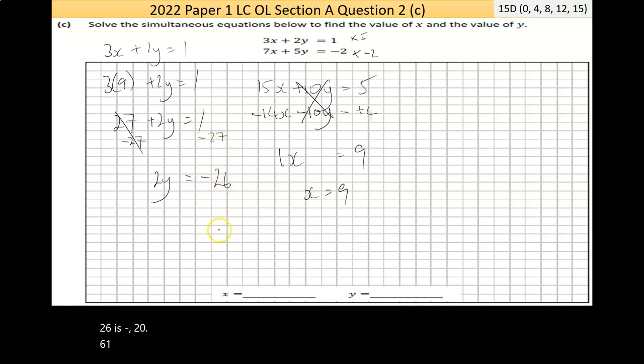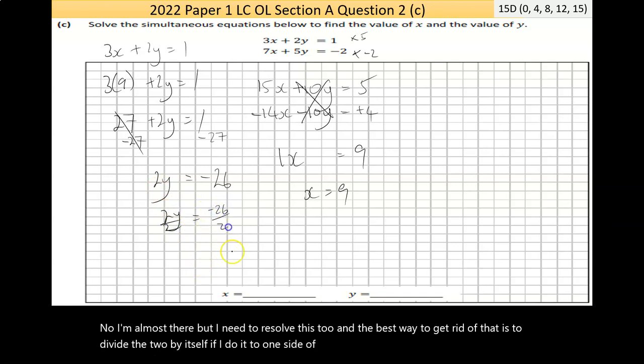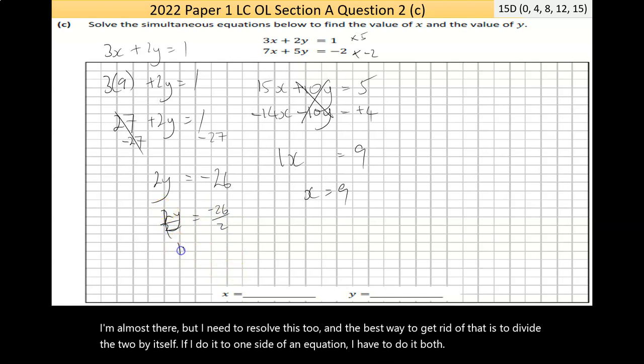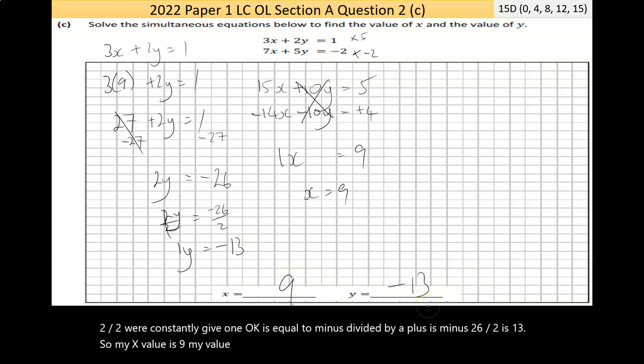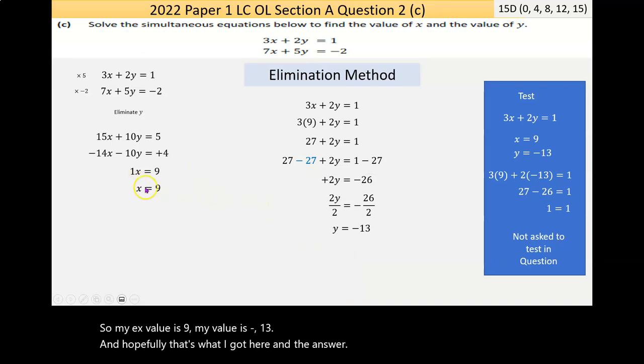Once I go left to right now and apply those little sums, 27 take away 27 is 0. We don't bother writing that. But the 2y hasn't been changed. And on the right-hand side, 1 take away 27 is negative 26. Now, I'm almost there, but I need to resolve this 2. And the best way to get rid of that is to divide the 2 by itself. If I do it to one side of an equation, I have to do it to both. Now, 2 over 2 will cancel to give 1, is equal to minus divided by a plus is minus. 26 divided by 2 is 13. So my x value is 9. My y value is negative 13. Now, hopefully, that's what I got here in the answer. x is equal to 9. y is equal to negative 13.